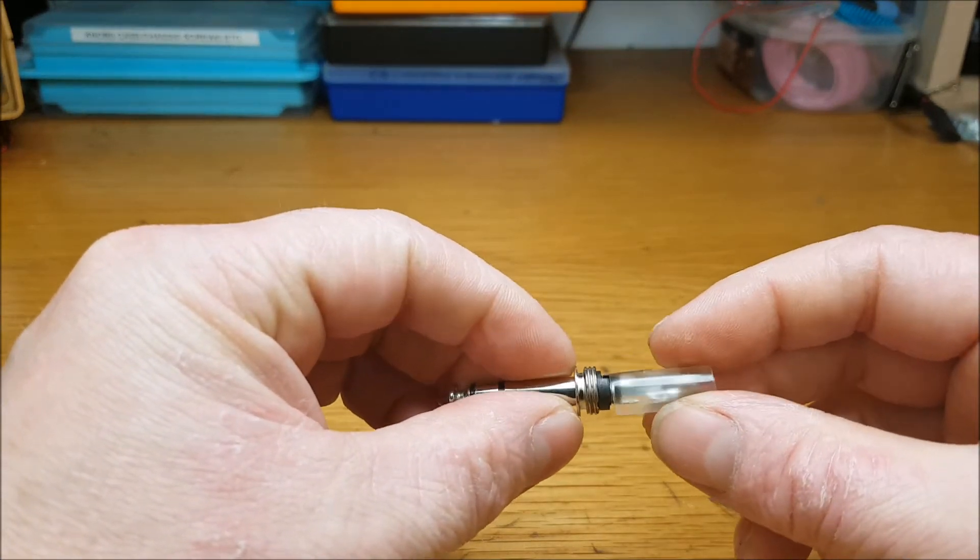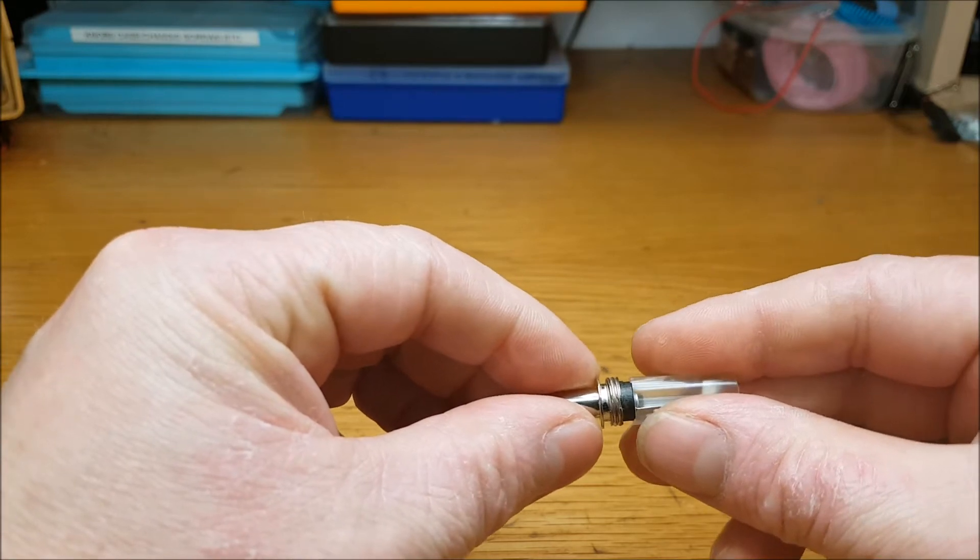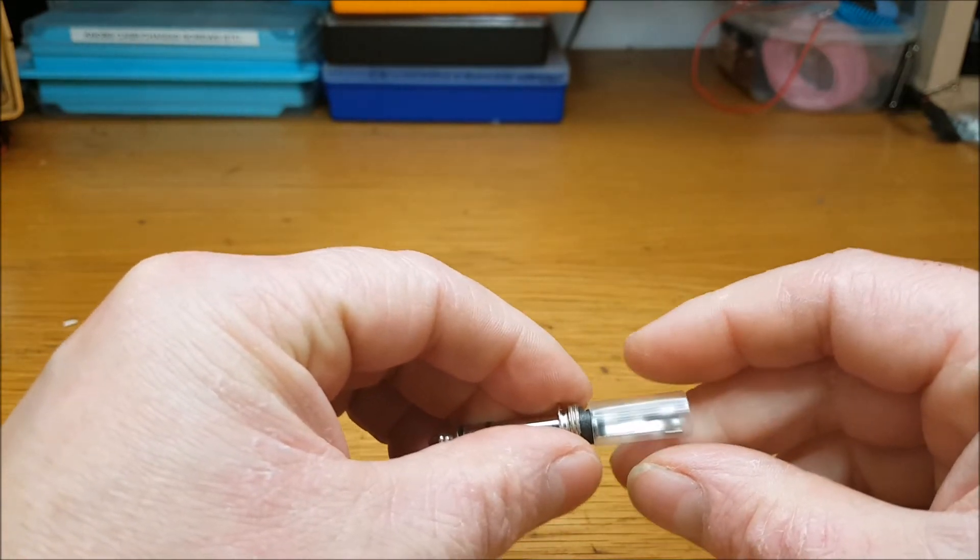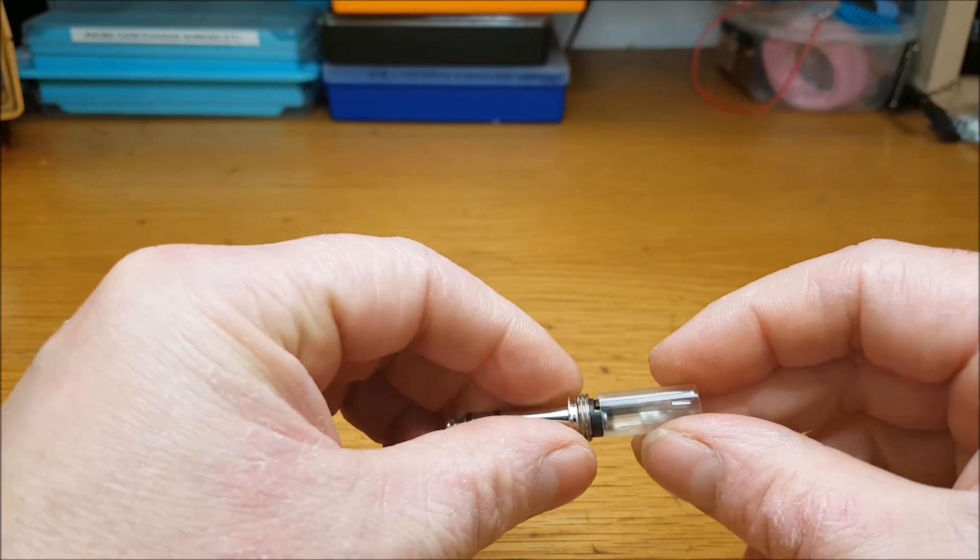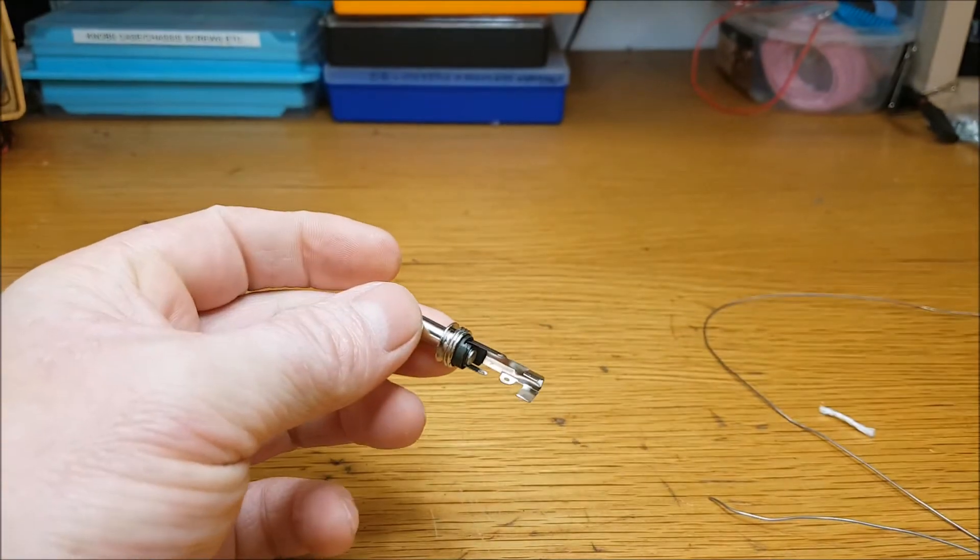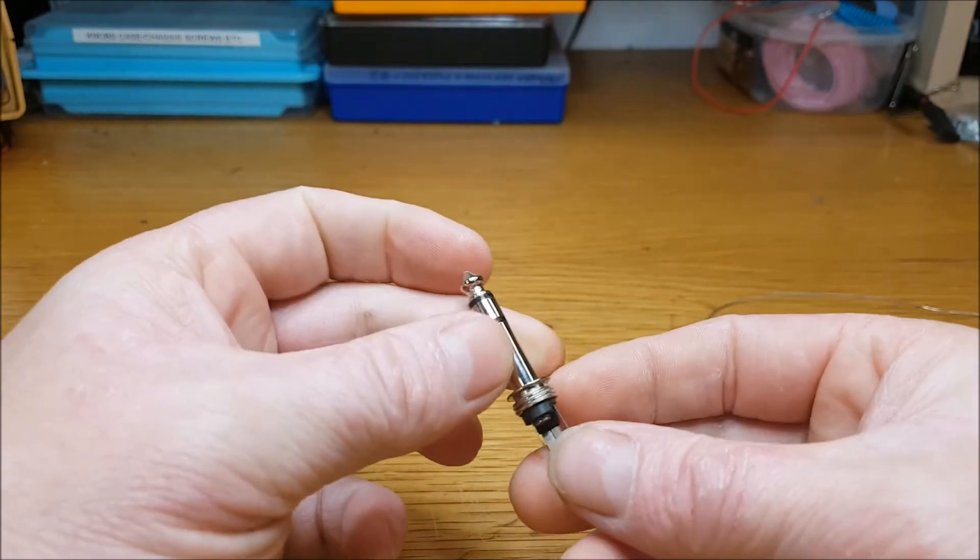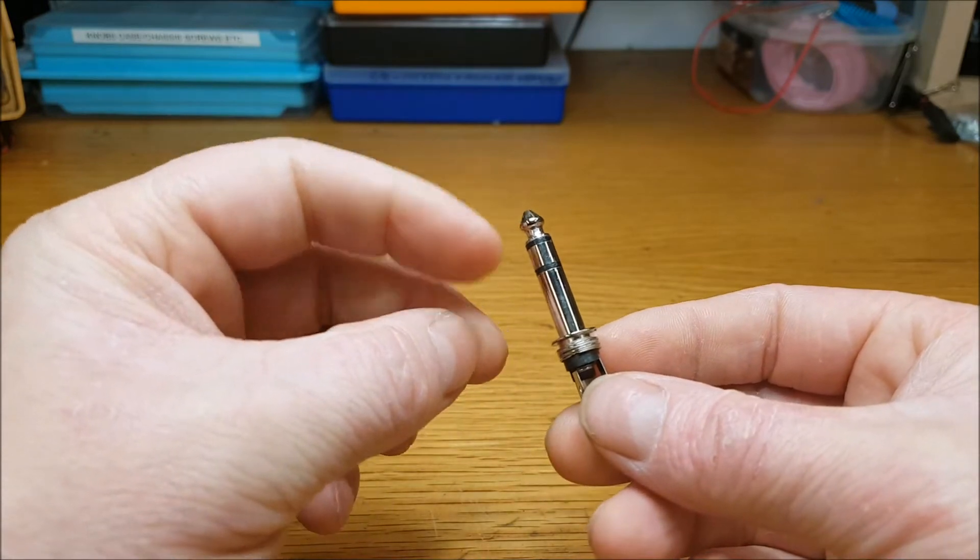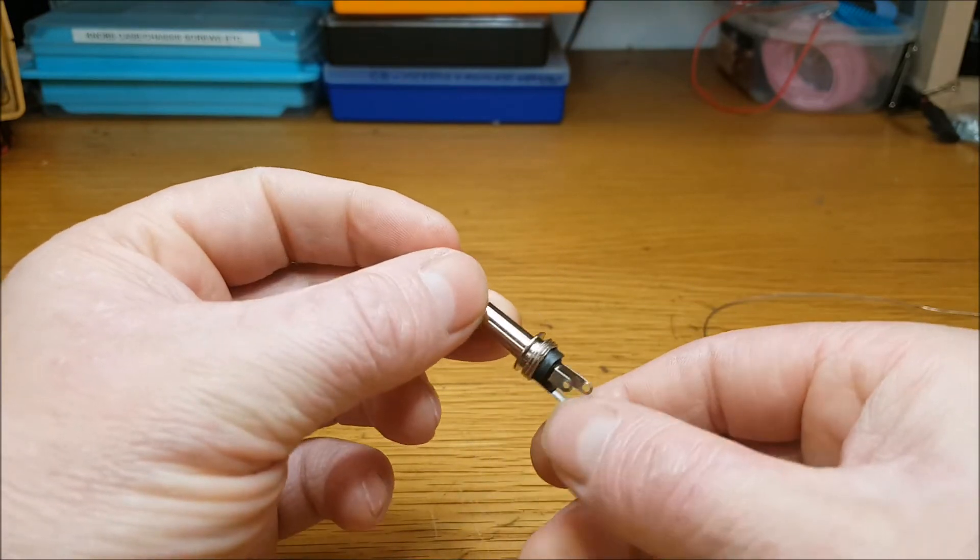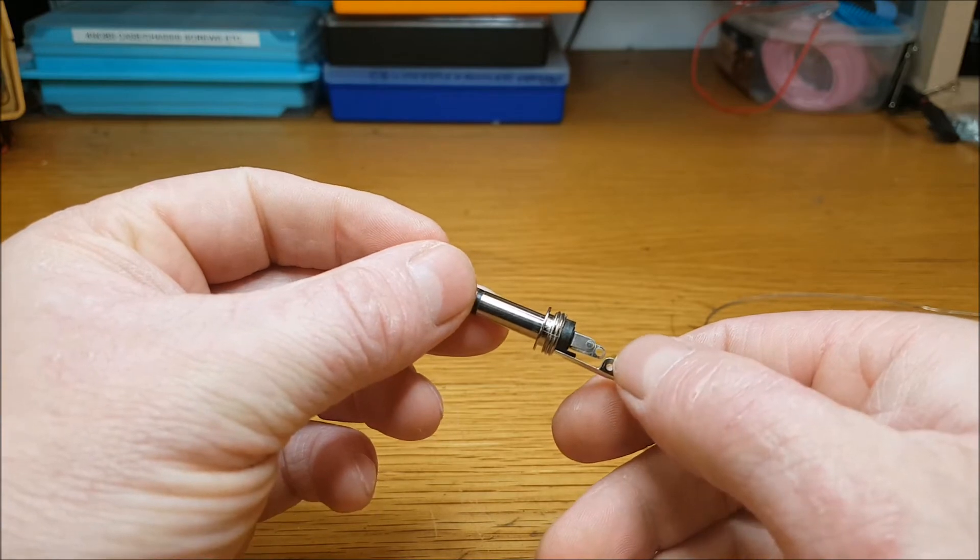So the way these are done inside, it's simple enough. The tip is here, as I said: ring and sleeve. Always the shortest one is the tip.